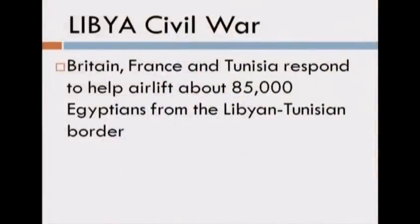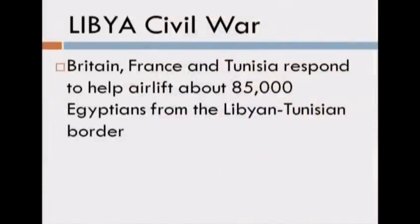Britain, France, and Tunisia try to respond. Tunisia is interesting because they just removed Ben Ali but share a serious border with Libya. When war breaks out, normal people take off — those are called refugees. We're talking about 85,000 Egyptians who had gone over there to work because jobs in Egypt were hard to get. The International Criminal Court is a newly created international organization out of the Rome Statutes of 2002. The International Court of Justice adjudicates disputes between states; the International Criminal Court goes after individuals that may be guilty of war crimes.